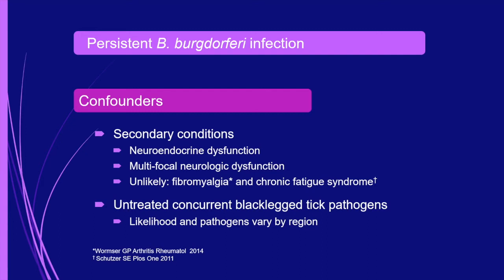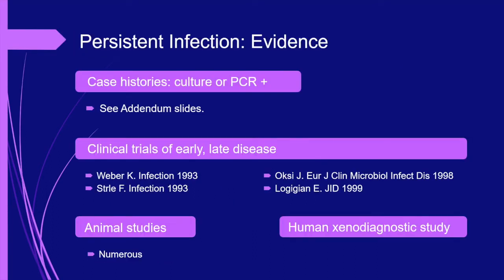The animal evidence is extensive. Persistent infection has been documented in mice, hamsters, rats, guinea pigs, dogs, ponies, and non-human primates. Therapeutic exploration in animal models allows for direct tissue sampling from multiple sites of sacrificed animals, which is obviously not an option in human trials.